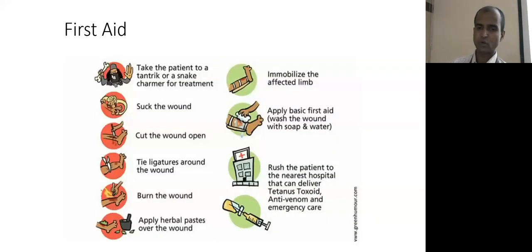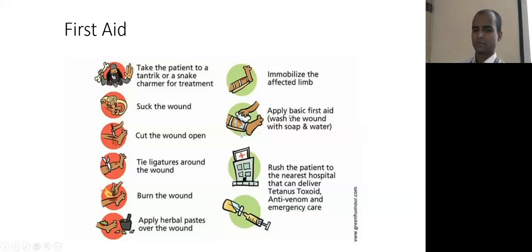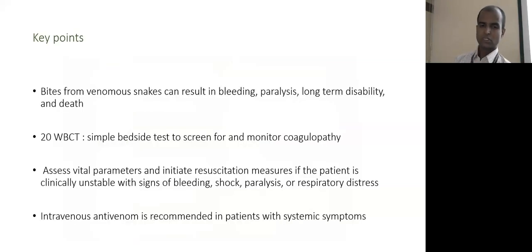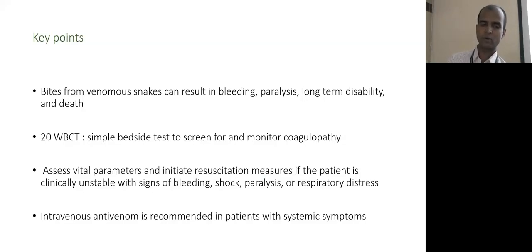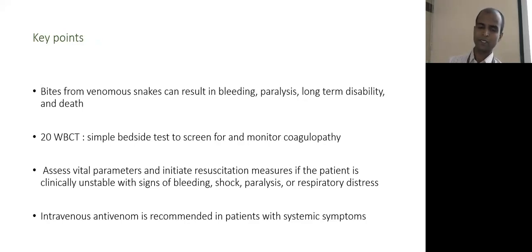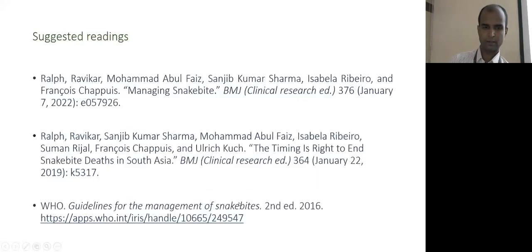In summary: bites from venomous snakes can result in bleeding, paralysis, long-term disability, and death. The 20-minute whole blood clotting test is a simple bedside test to screen for and monitor coagulopathy. Assess vital parameters and initiate resuscitation measures if the patient is clinically unstable with signs of bleeding, shock, paralysis, or respiratory distress. Intravenous antivenom is recommended in patients with systemic symptoms.